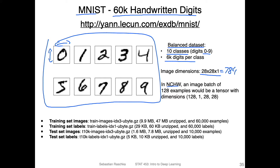In PyTorch, we will be using a format called NCHW, which is how we represent a mini-batch or an image batch. In this case, we have 128 examples in that mini-batch. Then we have a color channel — we have only one color channel because these are black and white images, so there are no red, green, and blue colors. Then we have the height, 28 pixels, and the width, also 28 pixels. This is usually how we read in the dataset into PyTorch.